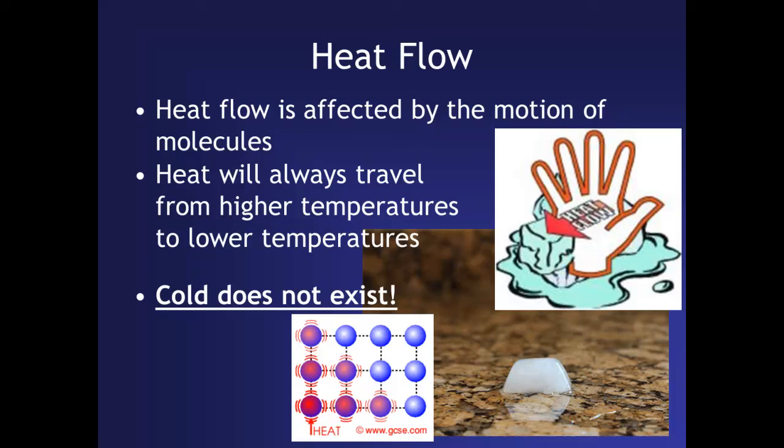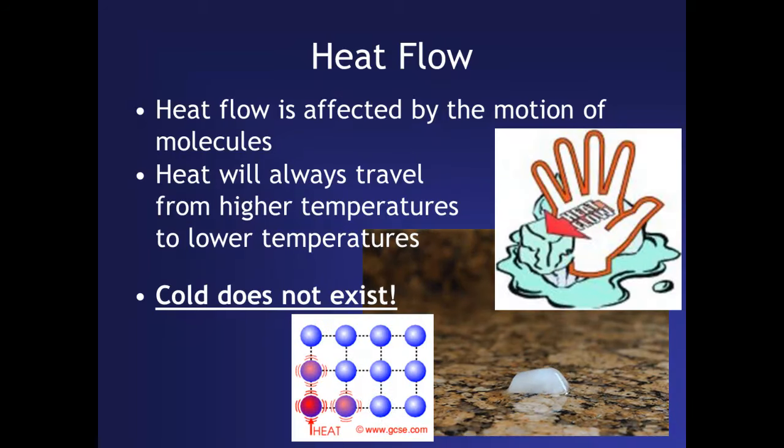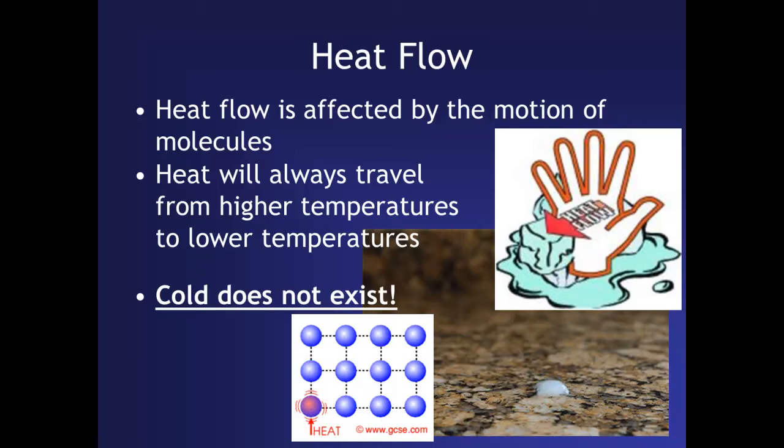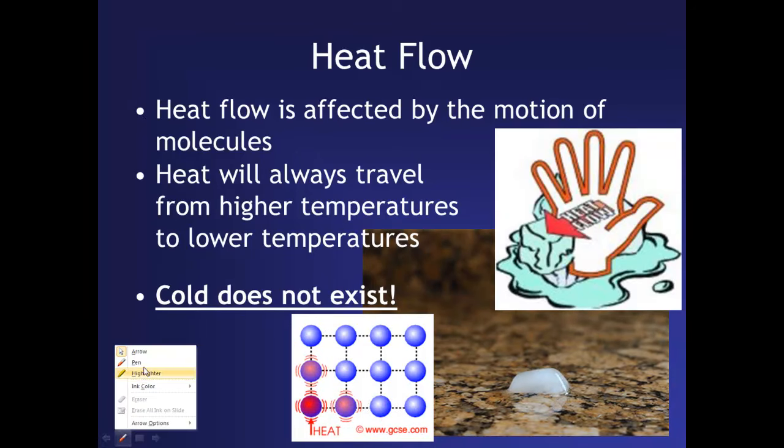Now, how does this happen? Heat flow is what accounts for the temperature being able to change. And heat flow is affected by the motion of molecules. These two points right here are extremely important. So the motion of molecules and the fact that heat always travels from high temperatures to lower temperatures. Those are questions that I always ask on assignments and on quizzes. So occasionally, I get somebody saying that heat transfers from left to right. That is not true. It is from high temperatures to low temperatures.